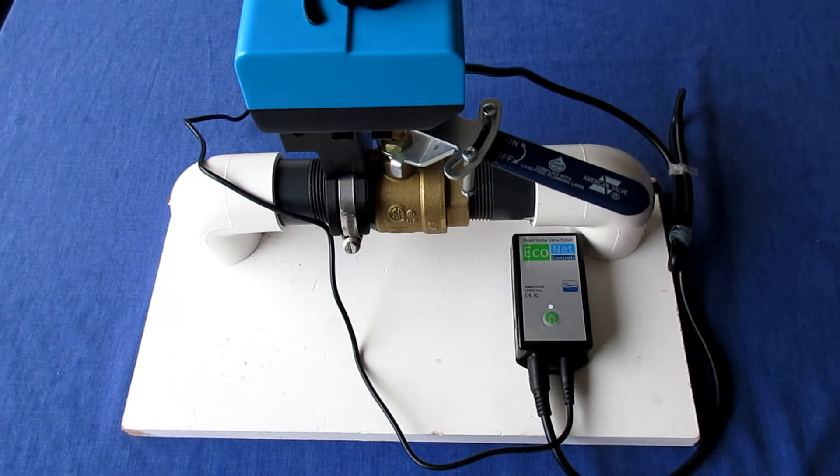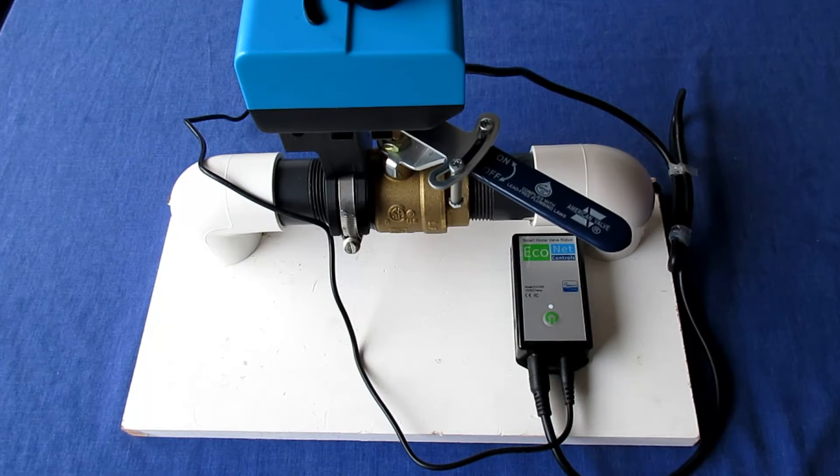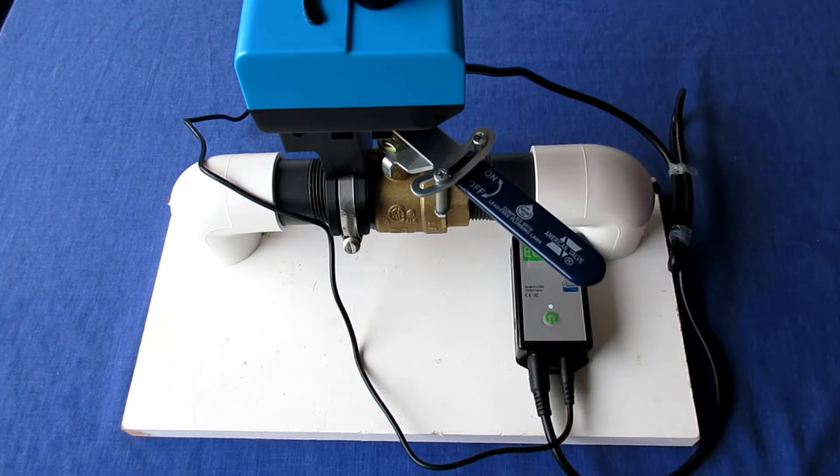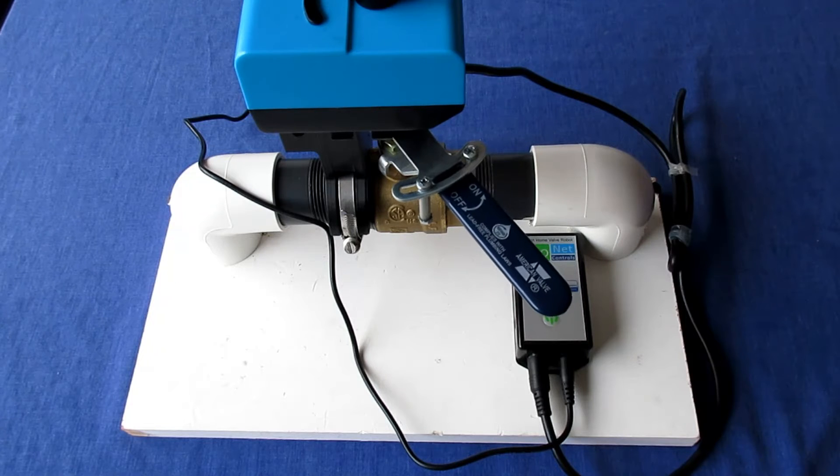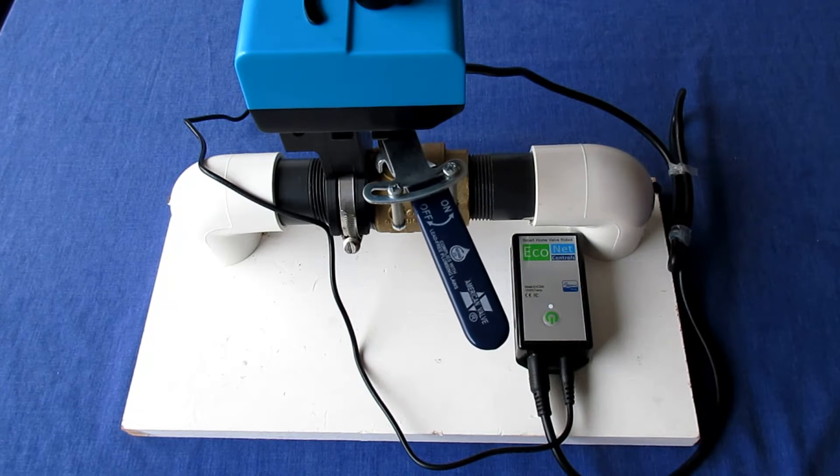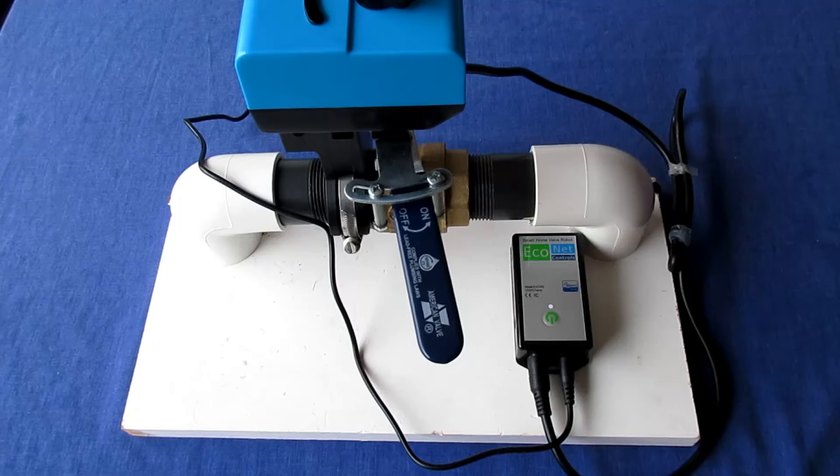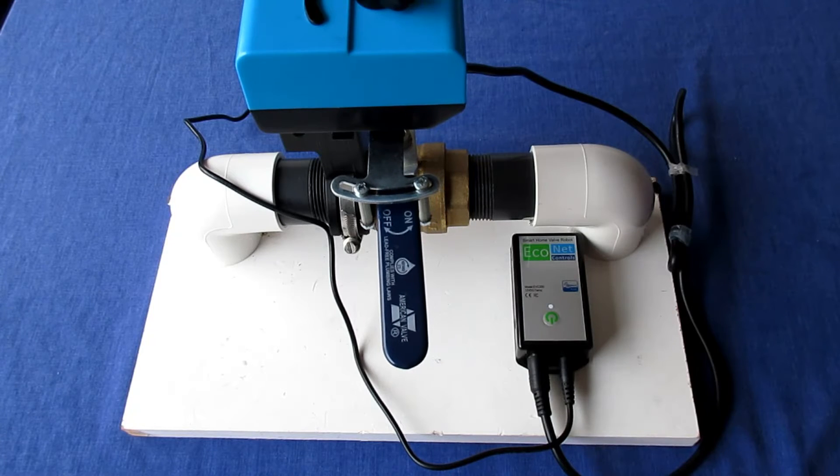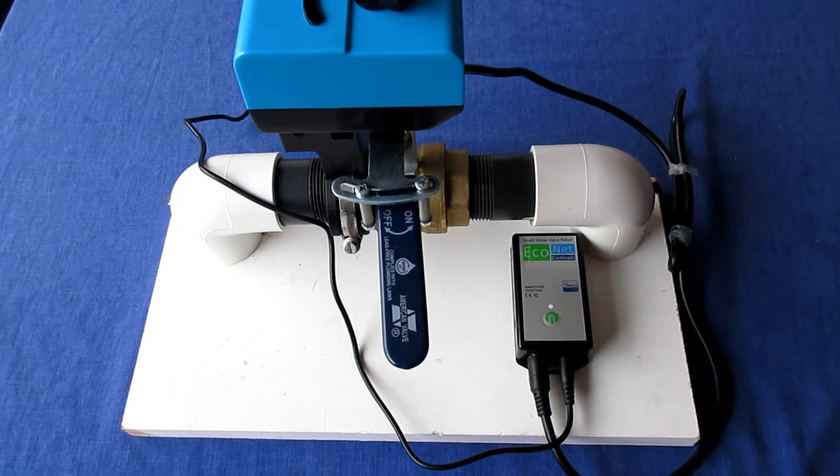Check the operation several times and make adjustments to the lever pins or bracket hardware as required. Your water valve should open and close completely with the Bulldog mounted securely.